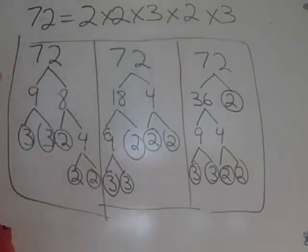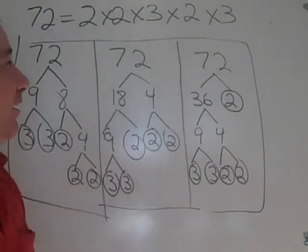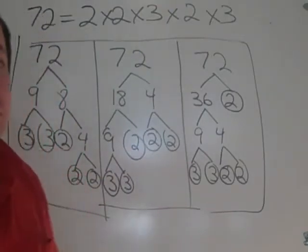There are three twos being multiplied together, as well as two threes being multiplied together.